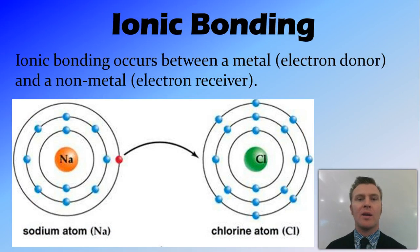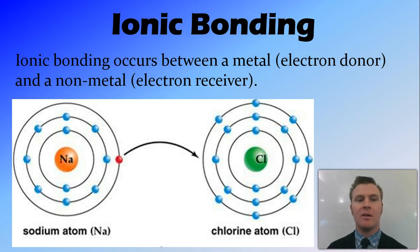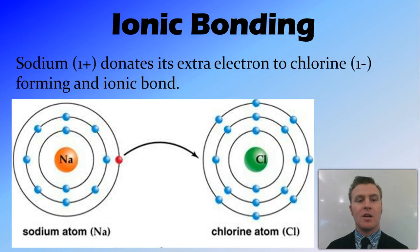Now we can look at ionic bonding. Ionic bonding occurs between a metal — metals being electron donors with a positive valency — and a non-metal, being an electron receiver with a negative valency. So sodium, which has a valency of 1+, donates its extra electron to chlorine, which is 1−, and forms an ionic bond with that chlorine.